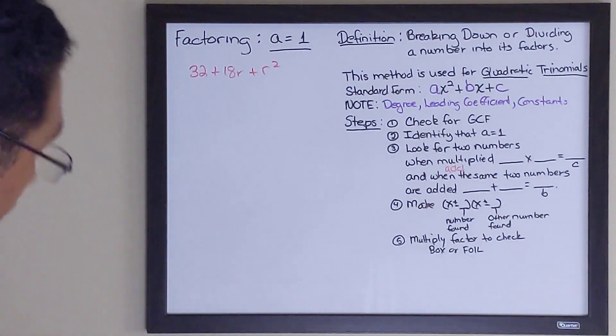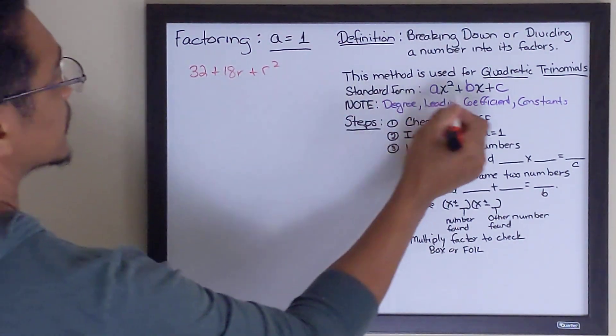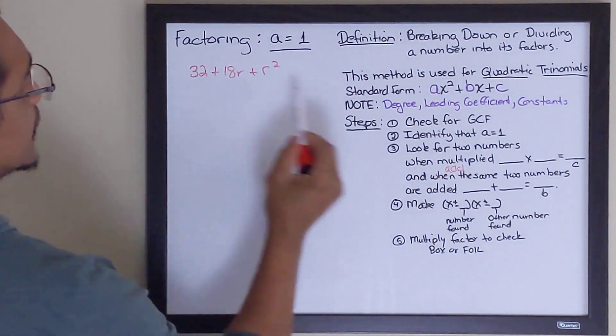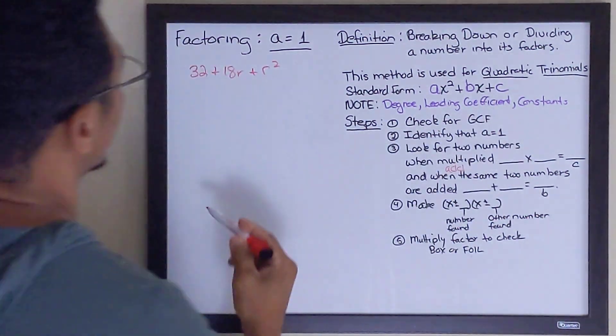Our next example is 32 plus 18r plus r squared. So, at first glance saying, Mr. Frazier, what? This doesn't look like this right here. Well, it is. It's just not in its standard form. So the first thing you probably want to do is put it in standard form.